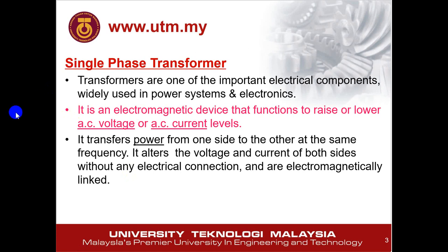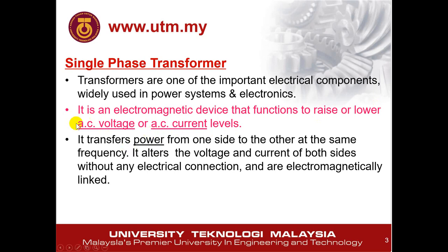What is a transformer? A transformer is a component used in power systems. Its function is to lower or increase the AC voltage and AC current level. Power doesn't change a lot. In an ideal transformer, there is no power change, no power loss — power input is equal to power output. Only the voltage and the current change, and it works with AC only.